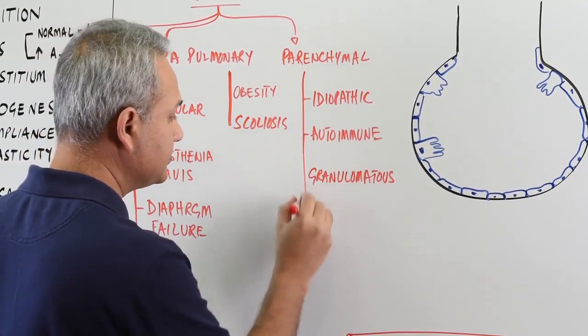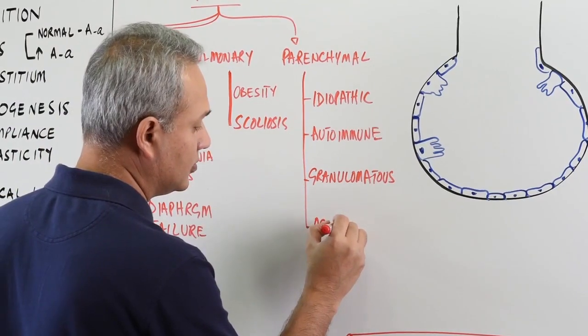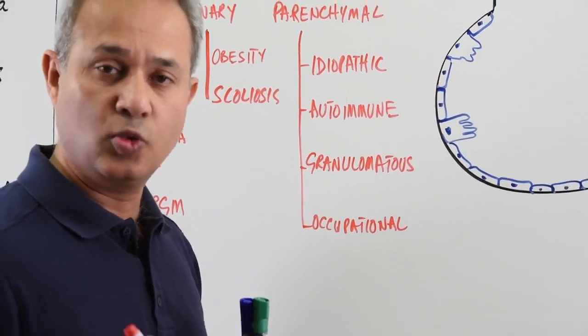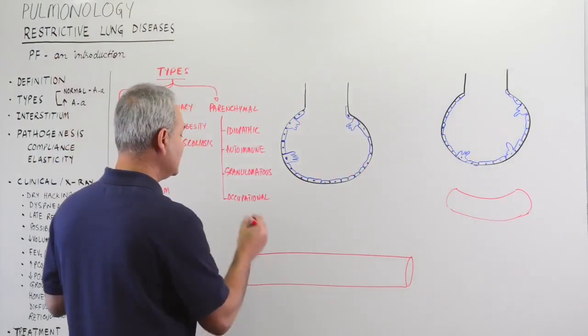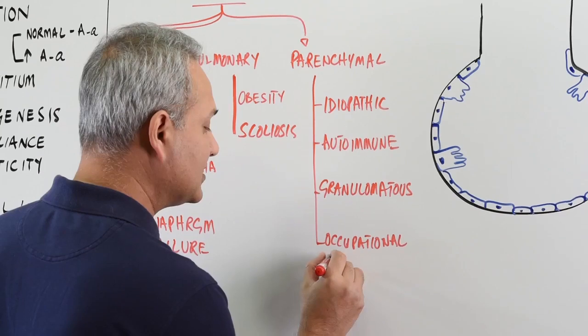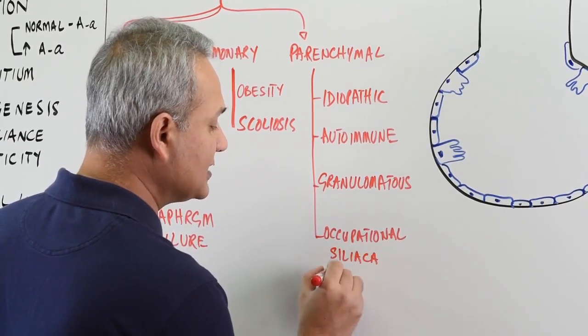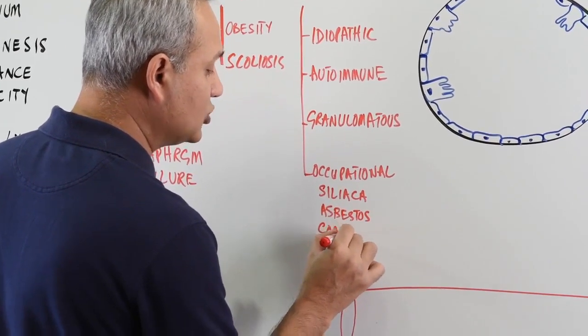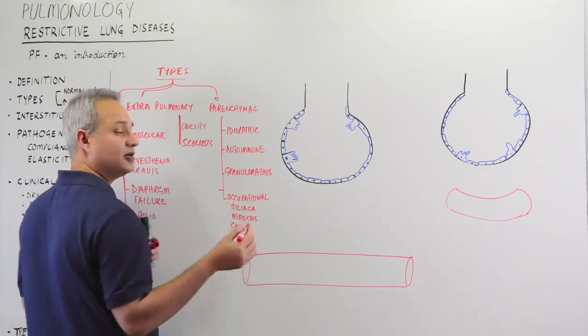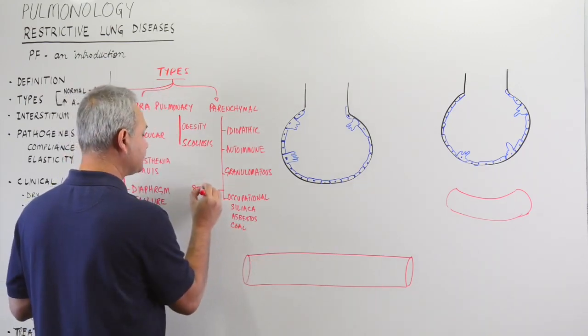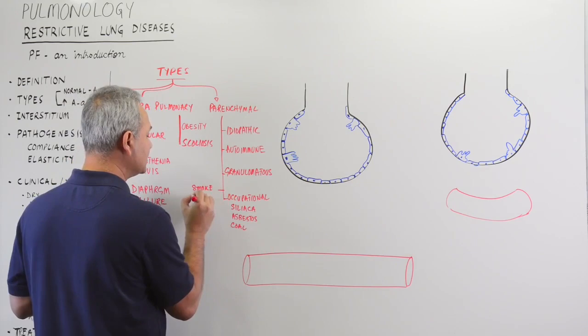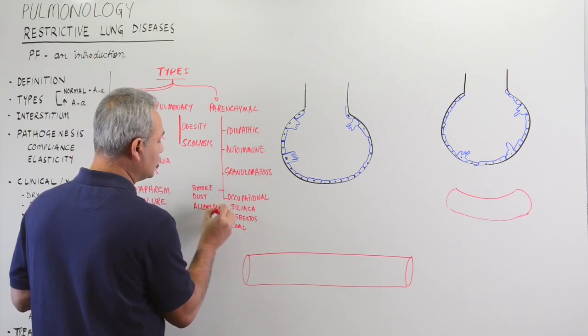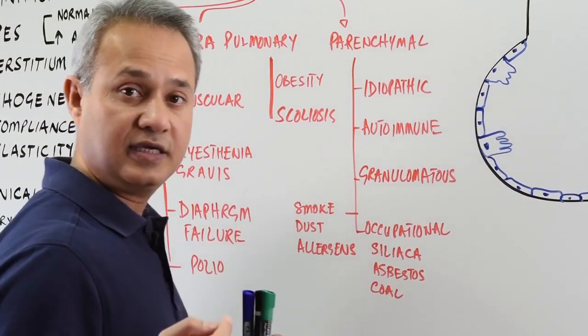Occupational diseases where we could have pneumoconiosis or the minerals like silica, asbestos, coal and so on. And, of course, that would also mean other irritants. For example, smoke, dust or other such allergens that are chronically irritating the lungs.